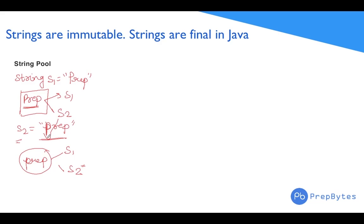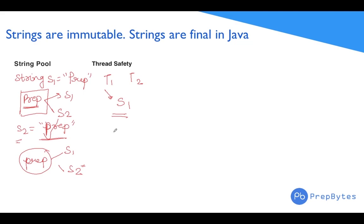Another reason is thread safety. Let's say we have two threads t1 and t2 and a string s1. If t1 or t2 tries to change the content of s1, we might get unwanted results. If multiple threads are accessing a particular string, changing its content would lead to unwanted results, which is why it makes sense to have strings as final.